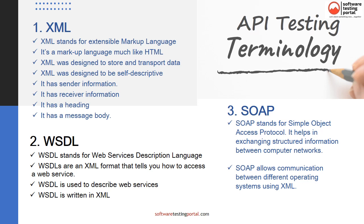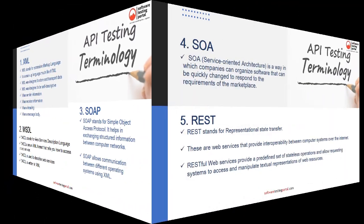Let's learn some important API testing terminologies. 1. XML stands for Extensible Markup Language. It's a markup language much like HTML, designed to be self-descriptive, with sender information, receiver information, heading, and message body. 2. WSDL stands for Web Services Description Language. It's an XML format that tells you how to access a web service, used to describe web services and written in XML. 3. SOAP stands for Simple Object Access Protocol. It helps in exchanging structured information between computer networks, allowing communication between different operating systems using XML.